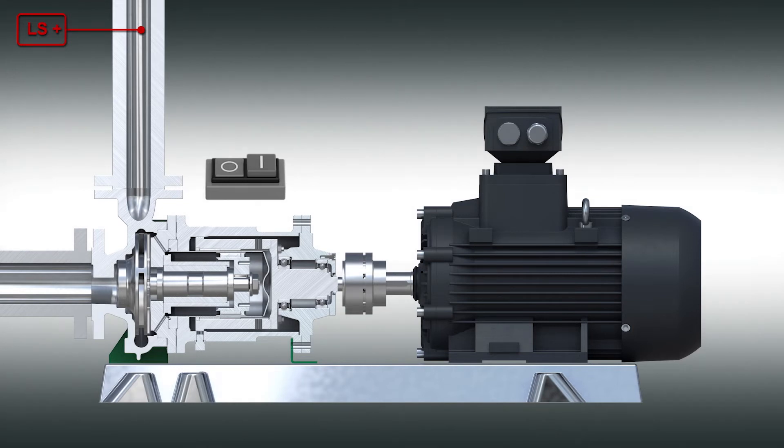The hermetic leak tightness of the magnetic drive pump is guaranteed by the containment shell. As with conventional centrifugal pumps, a commercially available standard motor is used to drive the pump. Permanent magnets are attached to the outer rotor of the magnetic coupling, transmitting the torque generated by the motor through the containment shell to the inner rotor that is also equipped with permanent magnets.